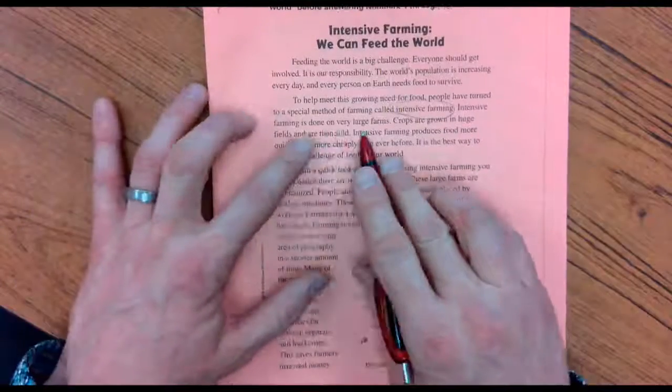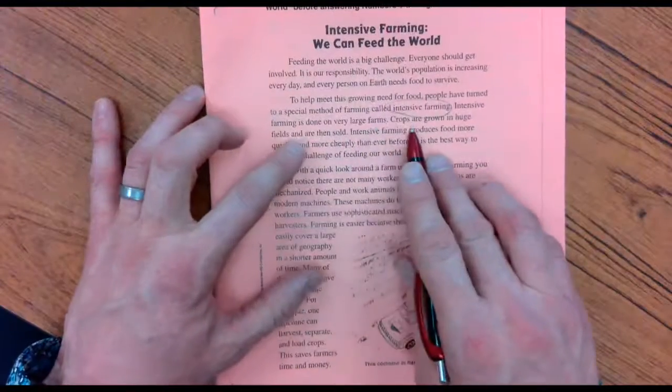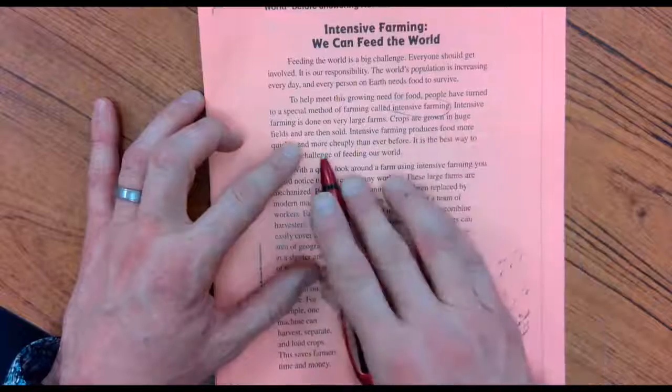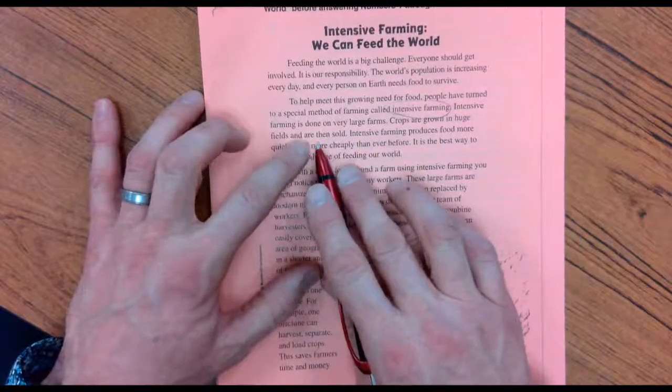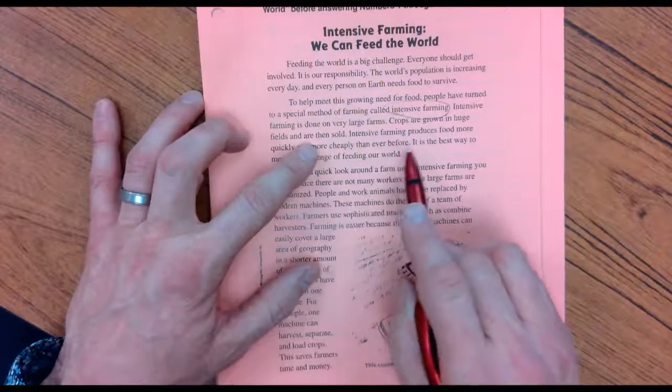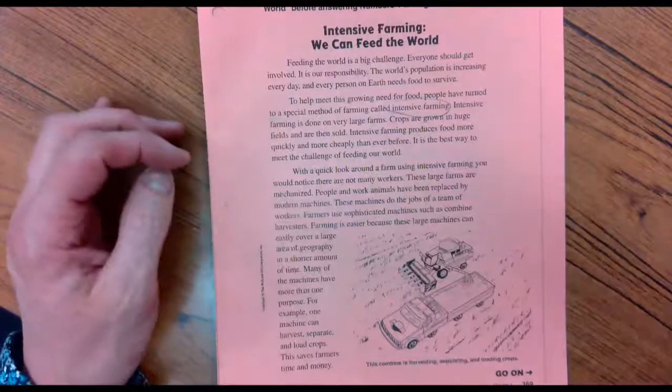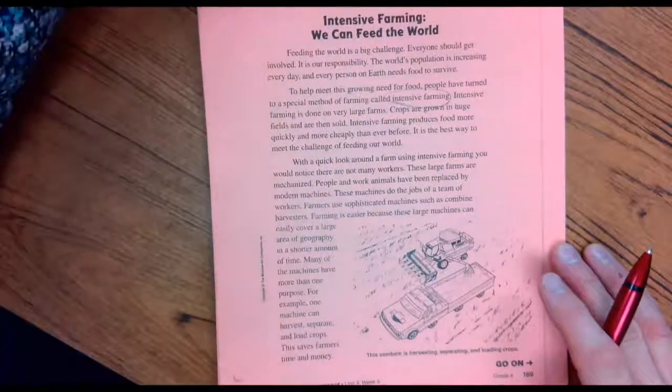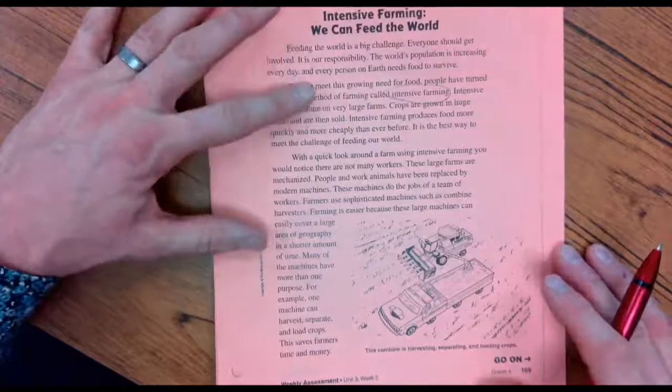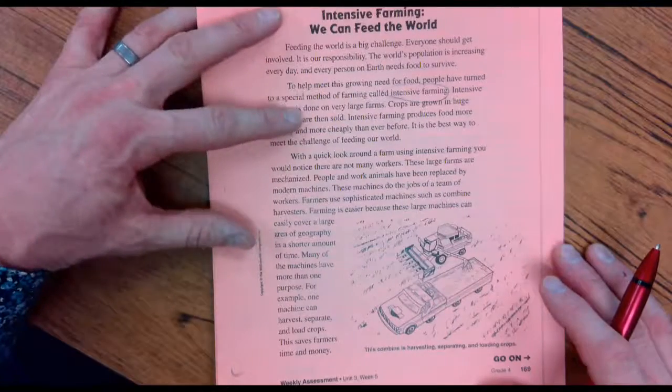Intensive farming is done on very large farms. Crops are grown in huge fields and are then sold. Intensive farming produces food more quickly and more cheaply than ever before. It is the best way to meet the challenges of feeding our world.